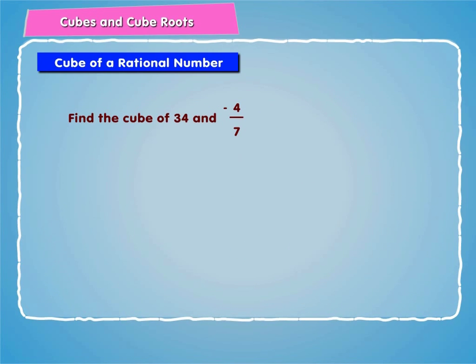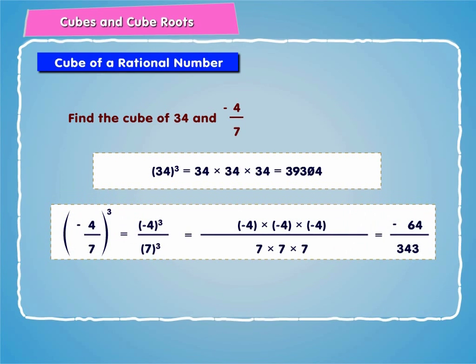To understand this, let us try to find the cube of 34 and minus 4 by 7. 34 cube is equal to 34 into 34 into 34 is equal to 39304, and minus 4 by 7 whole cube is equal to minus 4 cube by 7 cube, is equal to minus 4 into minus 4 into minus 4 by 7 into 7 into 7, is equal to minus 64 by 343.